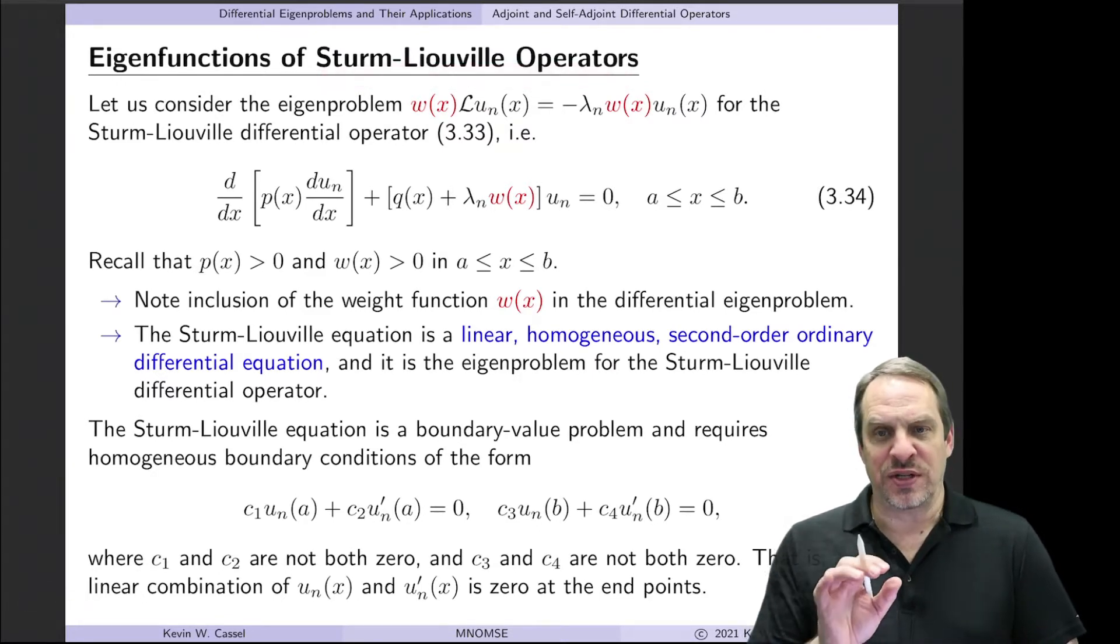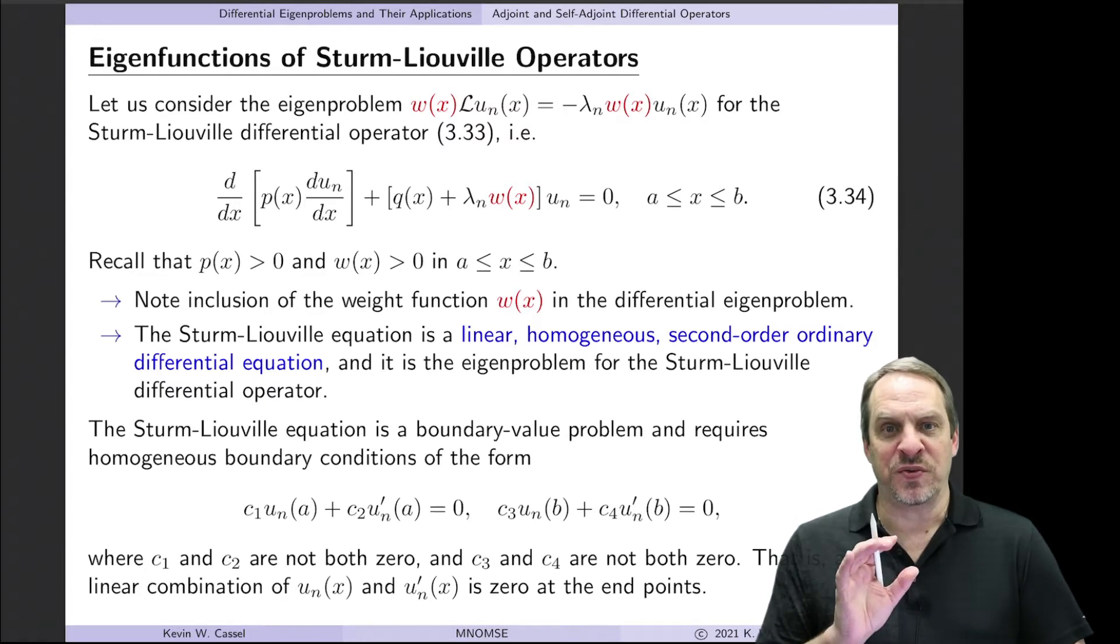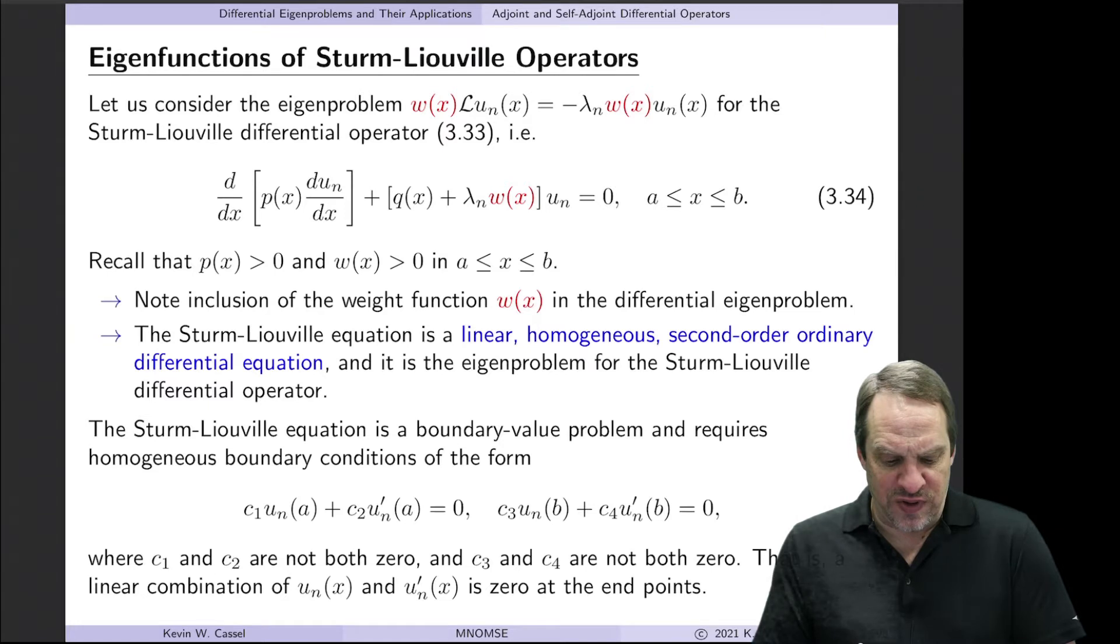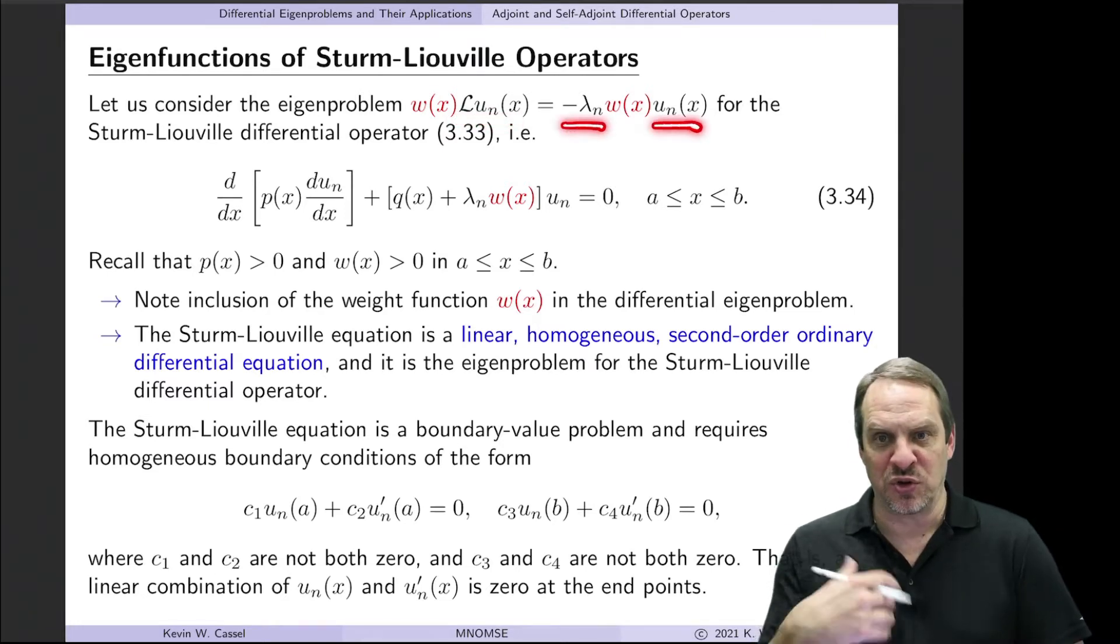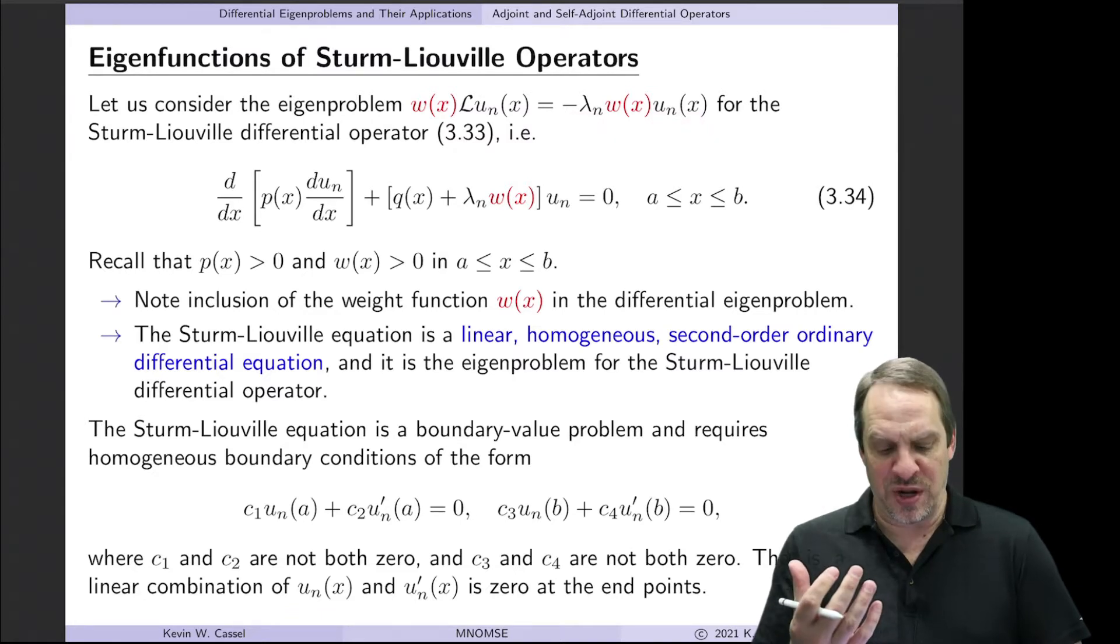So what we want to do here is to consider the eigenproblem, the differential eigenproblem for the Sturm-Liouville operator. So we have L operating on U is equal to minus lambda times U. That's the normal differential eigenproblem.